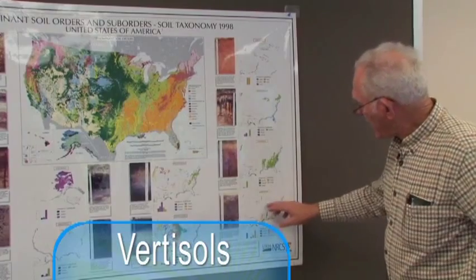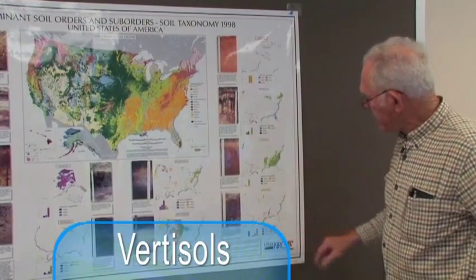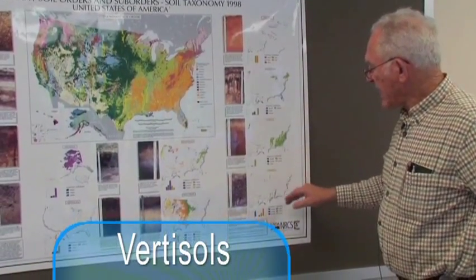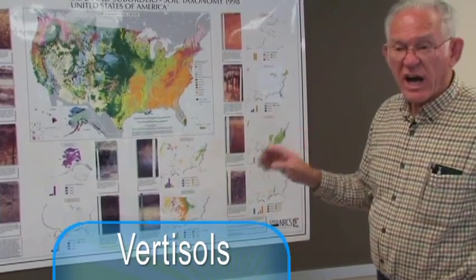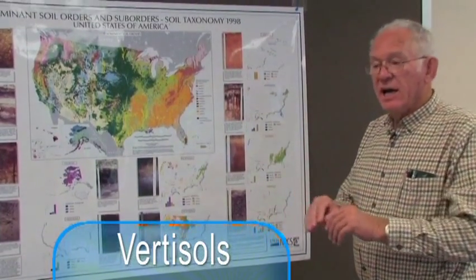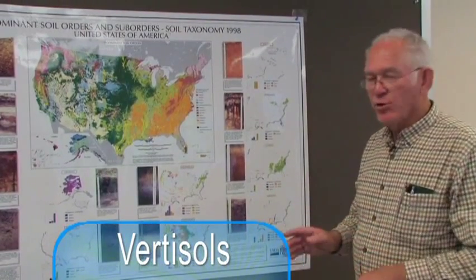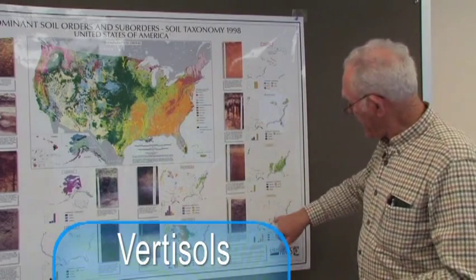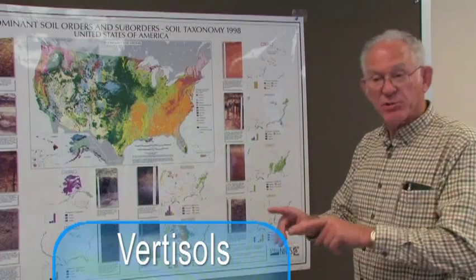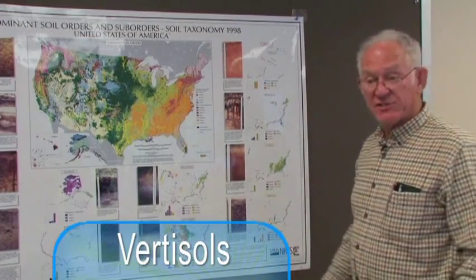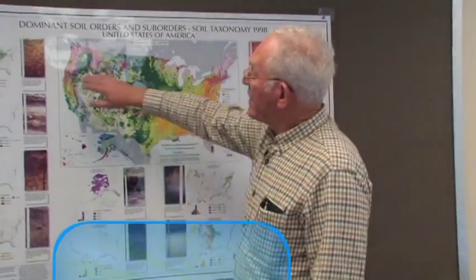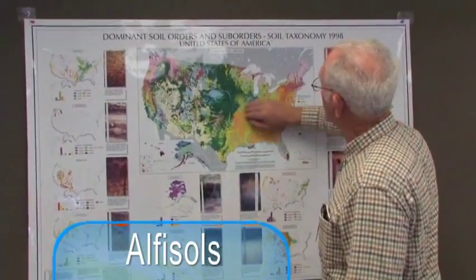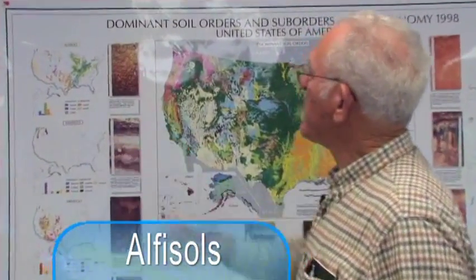The vertisols occur along what typically are river drainage system areas, but are characterized by soils that are high in clay and have very high swelling and shrinking characteristics. The old proverb that 'I lost my shovel in a crack' is what you would find in some of these soils, because the cracks will get four or five inches wide and may be five or six feet deep.